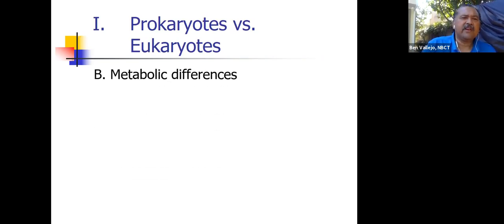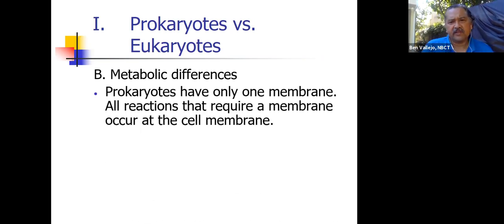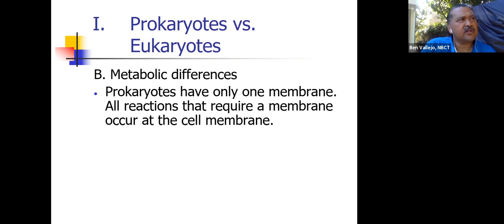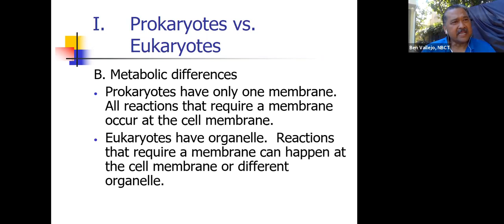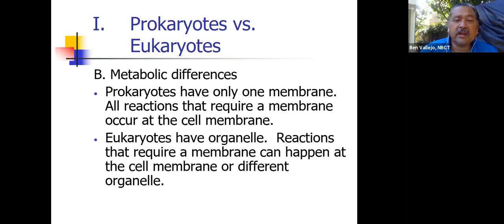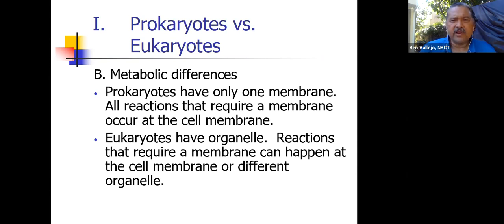Between prokaryotes and eukaryotes there are structural differences, but there are metabolic differences also. Those metabolic differences have to do with the membrane — because bacteria don't have organelles, they don't have all the little substructures inside the cell with different jobs. In eukaryotic cells, you have mitochondria that makes energy and ATP, chloroplasts where photosynthesis takes place, and the endoplasmic reticulum for secretory proteins. Prokaryotes don't have that. They only have one membrane — the plasma membrane or cell membrane — and anything that's going to happen has to happen there.